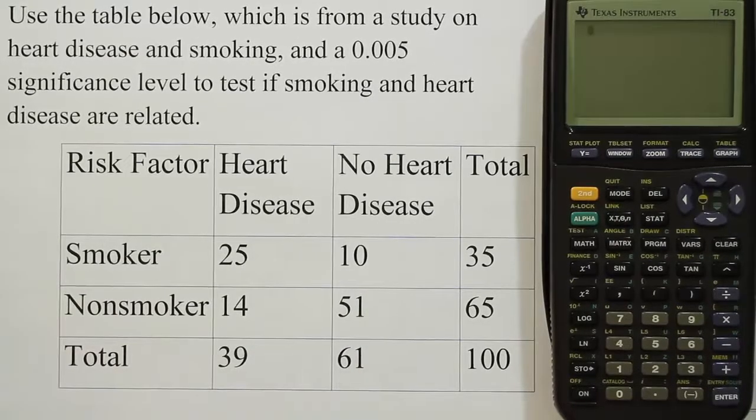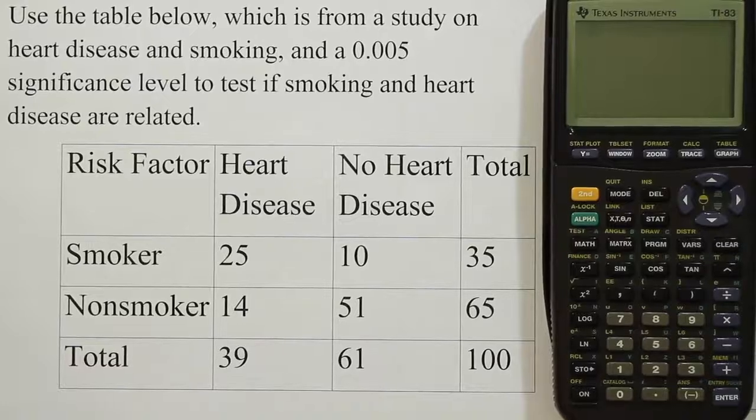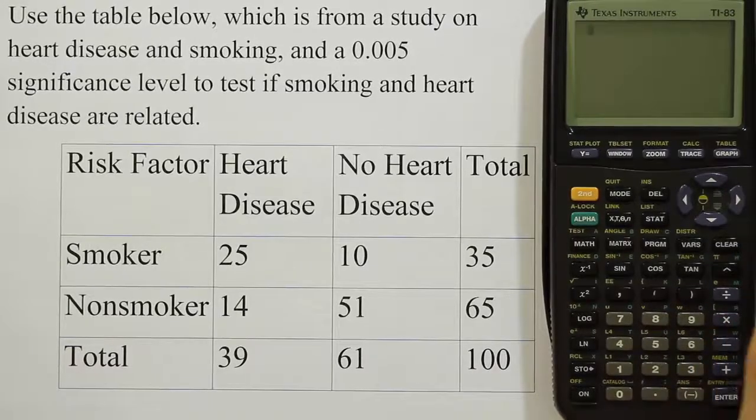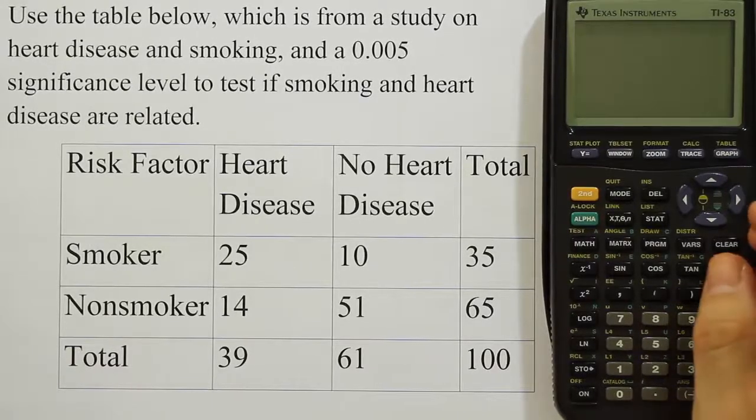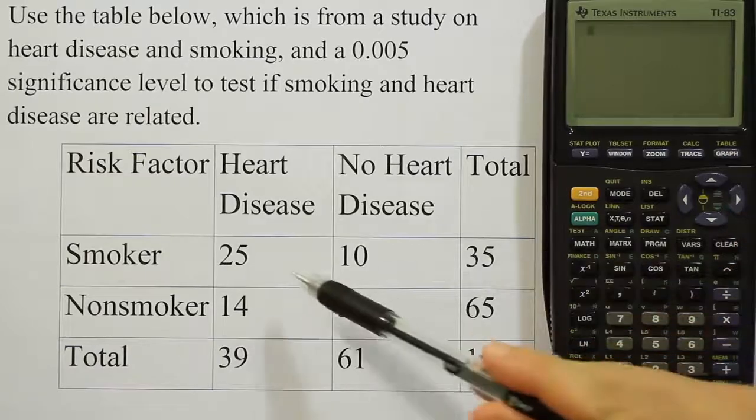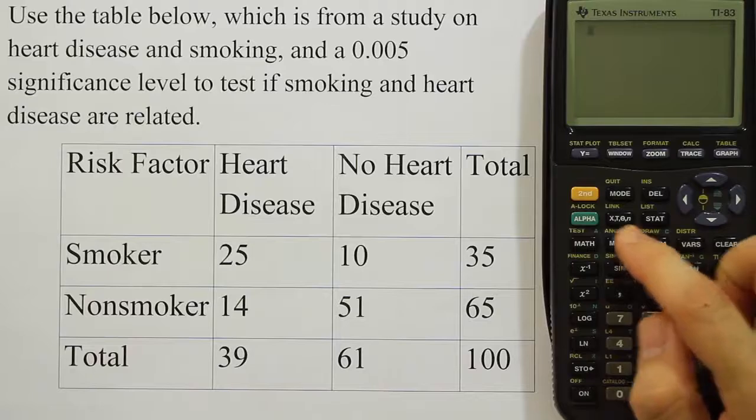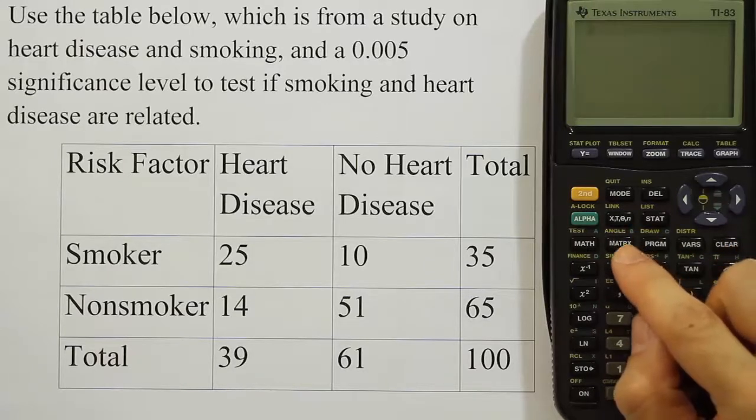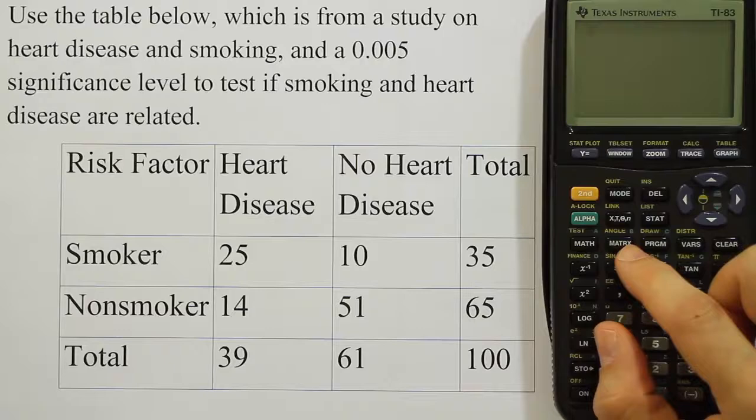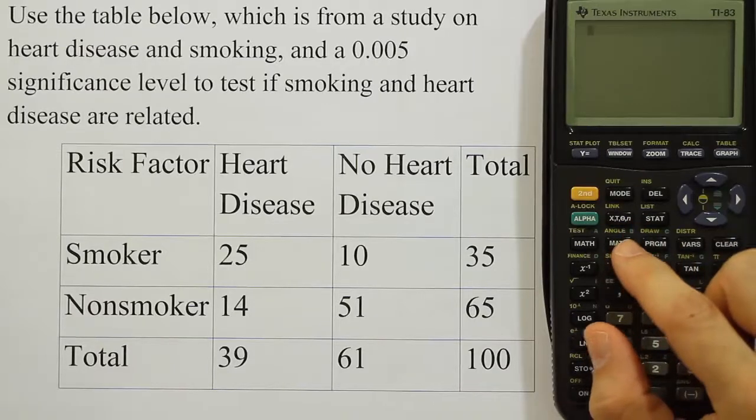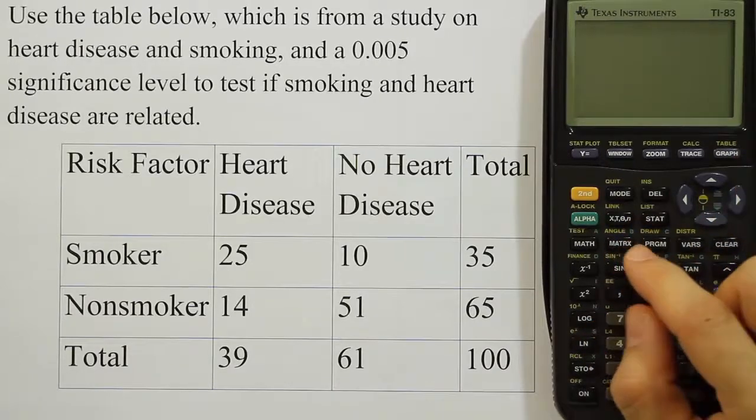Let's show how this is done in the calculator. The procedure is a little different but not too hard. We're going to first set up a matrix in our calculator that contains these four cells of data. Press the matrix button on your graphing calculator. Some of you might have this in a different location, but either way you should see matrix somewhere. In the 83 it's a button right there.